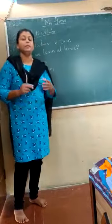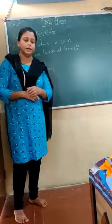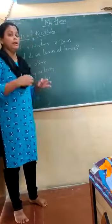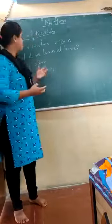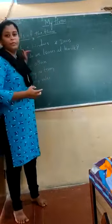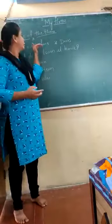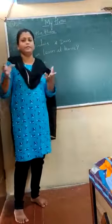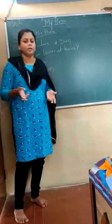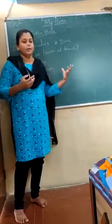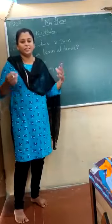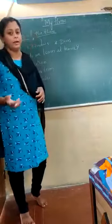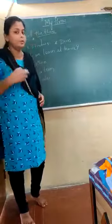My home — what does it mean? There are many types of parts at my home. For example, there is a roof, windows, doors, shelves, corners, a bedroom, a bathroom, a kitchen, and a living room. Like this, we have different parts of the house.